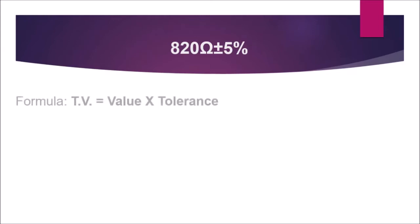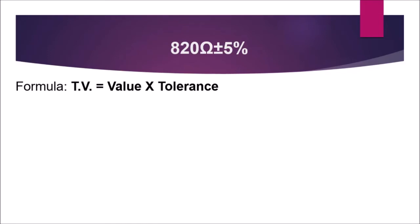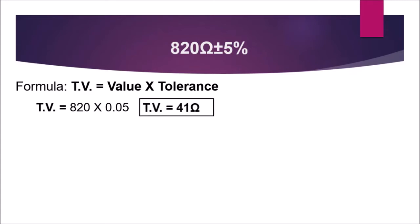So the tolerance value is equal to the value multiplied by the tolerance. We need to convert the percentage into a decimal number first: 5% is equal to 0.05. So we have the value which is 820, multiplied by 0.05. If you multiply 820 by 0.05, we will have an answer of 41 ohms.